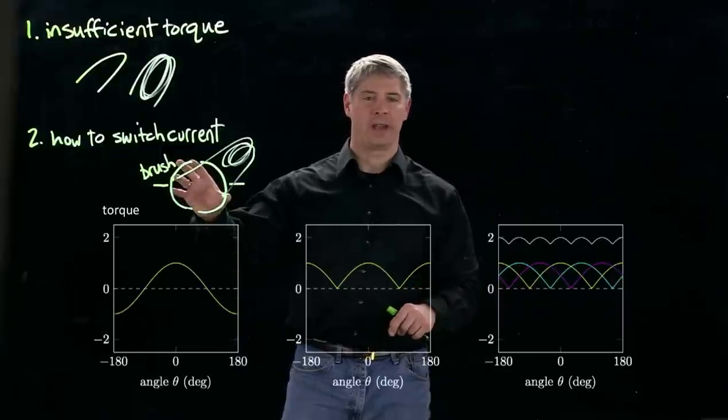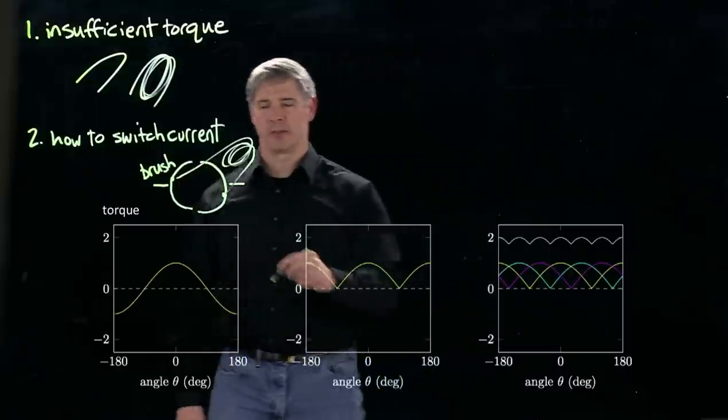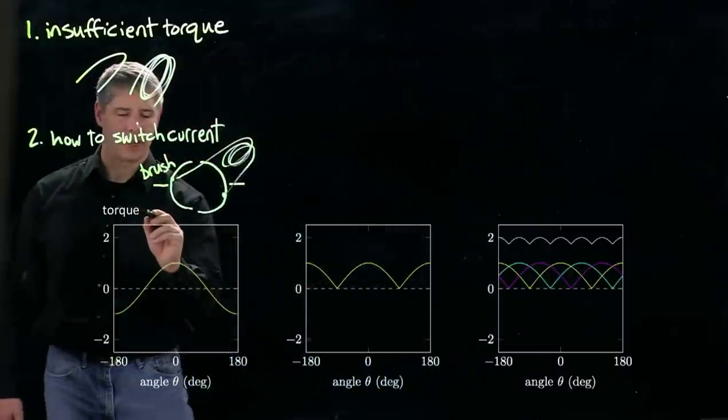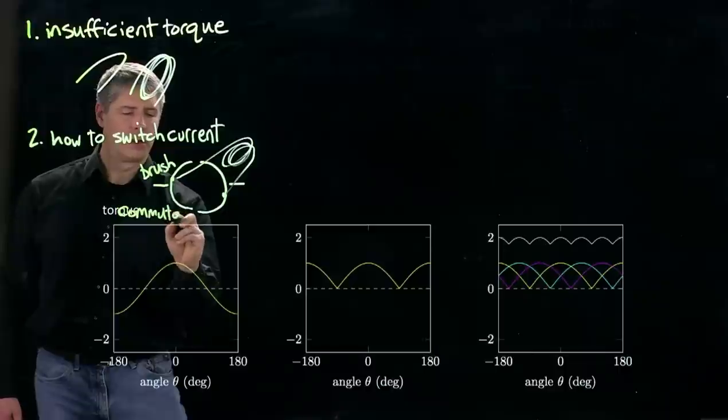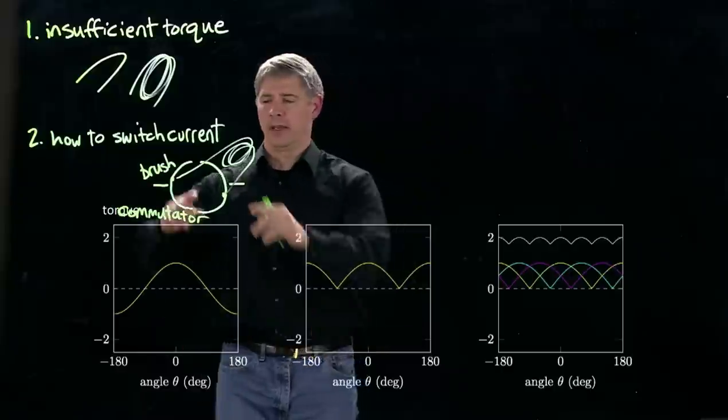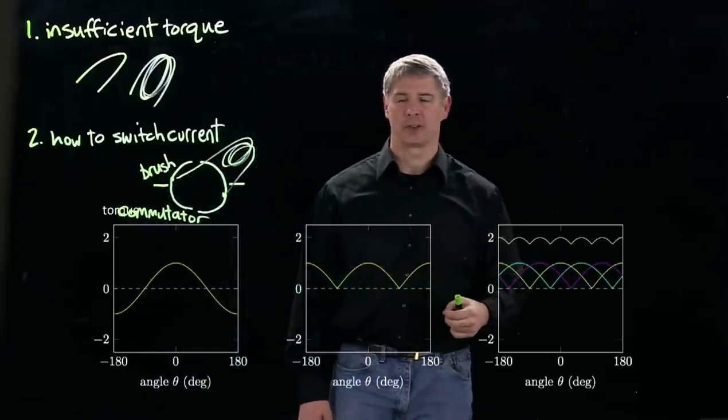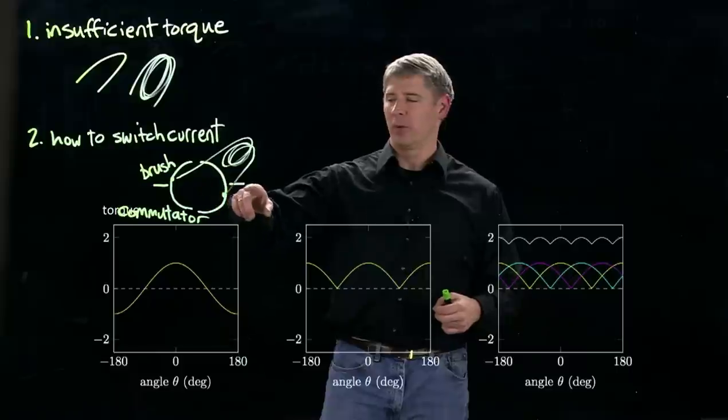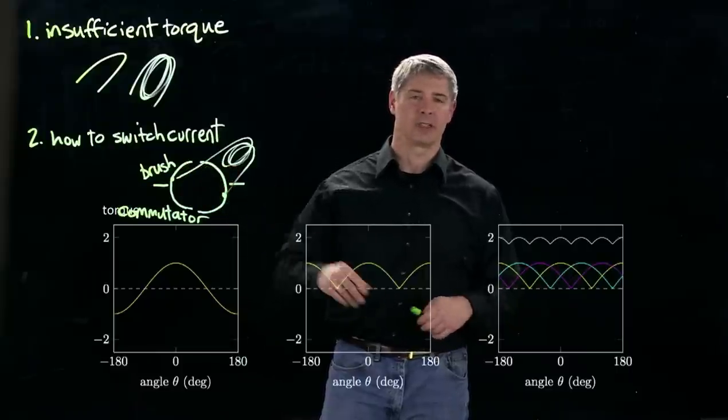This is a simplified picture for just one coil and two segments. These two segments together is called the commutator, and each of these is called a commutator segment. So it's an actual mechanical switching. As we get to the right angle, we switch from this brush sliding over this commutator segment to this commutator segment.